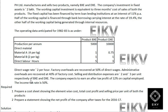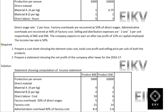Administration overhead is recovered at 40% of factory cost. Selling and distribution expenses are 3 and 2 per unit respectively for BXE and DXE. The company expects to earn an after-tax profit of 12% on capital employed. The income tax rate is 50%. You are required: (1) to prepare a cost statement showing element-wise cost, total cost, profit, and selling price per unit for both products; (2) to prepare a statement showing net profit after taxes for the year.